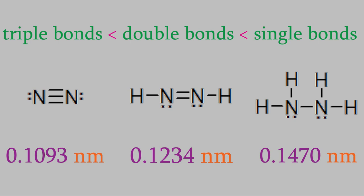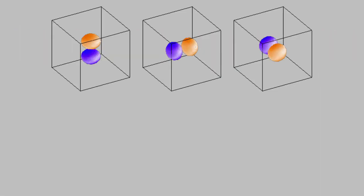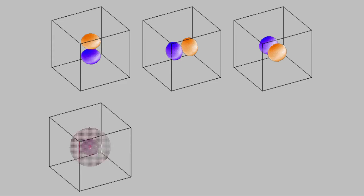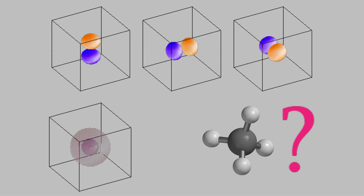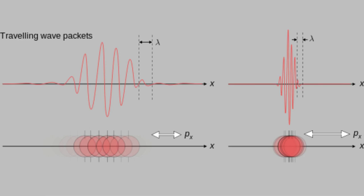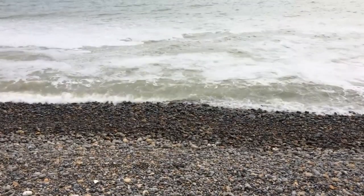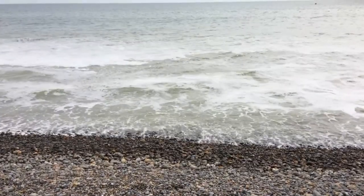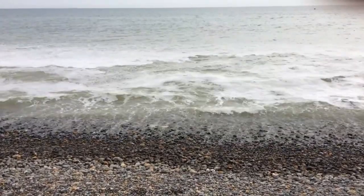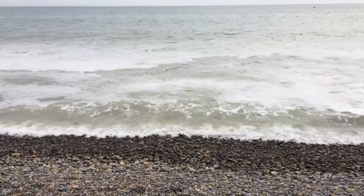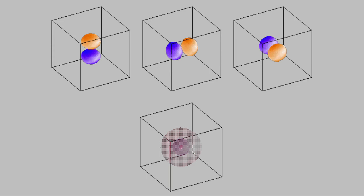One last thing you might have noticed: the three p orbitals are all at right angles to each other, and the s orbitals are spherical. So how can we have a tetrahedral molecule like methane, where the bond angle is 109.5 degrees? The key is to remember that electrons behave like waves, not particles. Imagine you're at the beach watching waves in the water — when two waves meet each other, they combine, and the larger wave isn't shaped exactly like either of the two waves you started with. The same is true when we combine electrons.